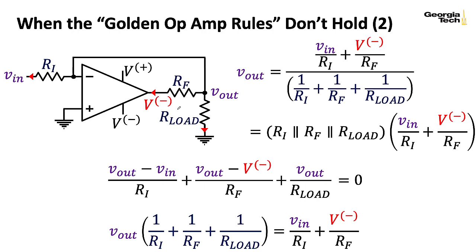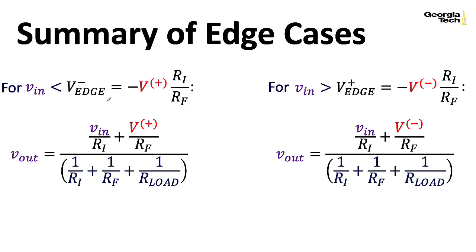So combining all of these results together, we see that if your input voltage is lower than the negative edge boundary, the output is governed by this equation. But if the input is greater than the positive edge boundary, then the output is governed by this equation. Now remember, because of the minus signs in here, the behavior of the negative input voltage range is determined by the positive supply voltage, and the behavior of the positive input voltage range is controlled by the negative supply voltage.